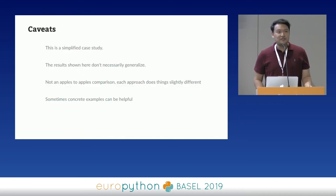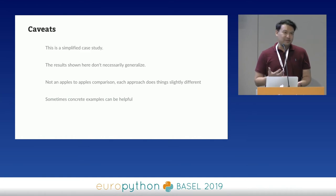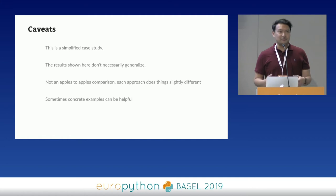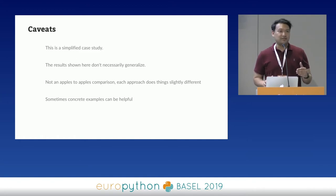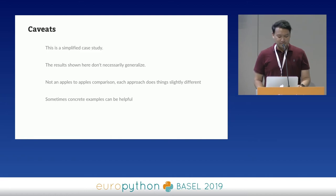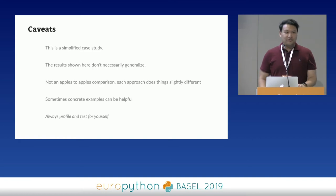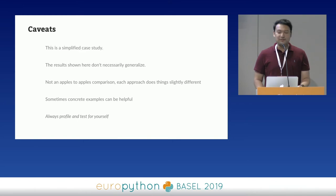Before we get into the approaches, a couple of caveats: this is a simplified case study and the results don't necessarily generalize. Just because asyncio or multithreading comes out ahead doesn't mean you should always use that. It's showing a specific use case — for this problem, this client, this environment, and this network. That said, having a concrete example is helpful, because understanding when to use multithreading versus multiprocessing and what the trade-offs are can still be challenging. Always profile and test for yourself — you can't get around that.